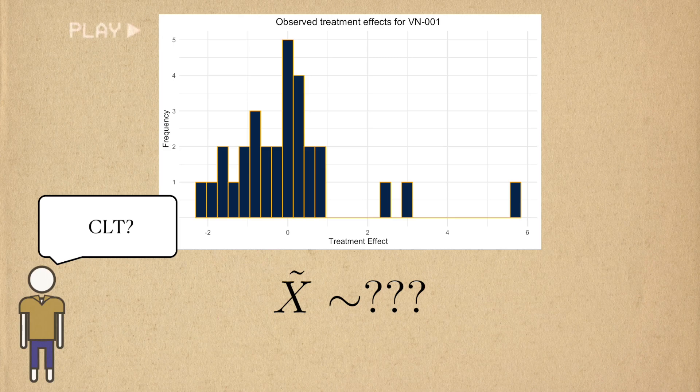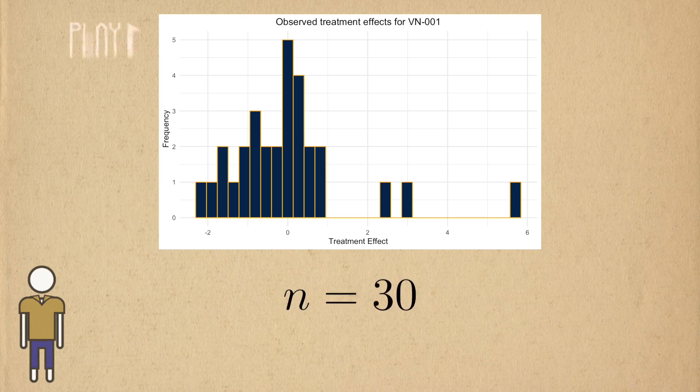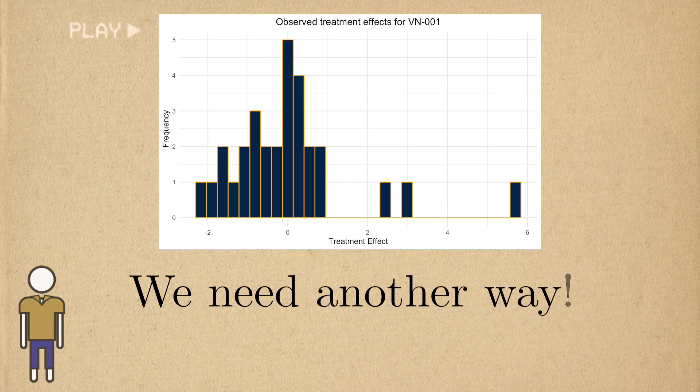Central limit theorem can work here, but it's a little shaky. Our sample size isn't that big, so I'm not sure if asymptotics can kick in. You're not in your PhD program anymore. You can't just use asymptotics to solve all your problems.